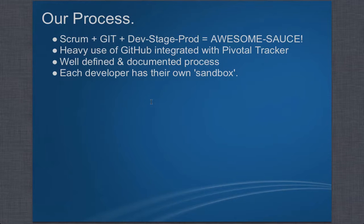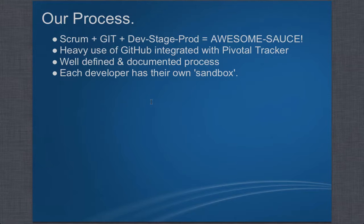We also make heavy use of GitHub, which is integrated with Pivotal Tracker. Pivotal Tracker is a program used for Scrum — unfortunately you have to pay for it, but it's worth it. It's a great story manager with integrations with GitHub so that we can tie, from reading a story, exactly what commits went into our repository to make that story happen. This tells you the whole life cycle of development — it's really an amazing thing.